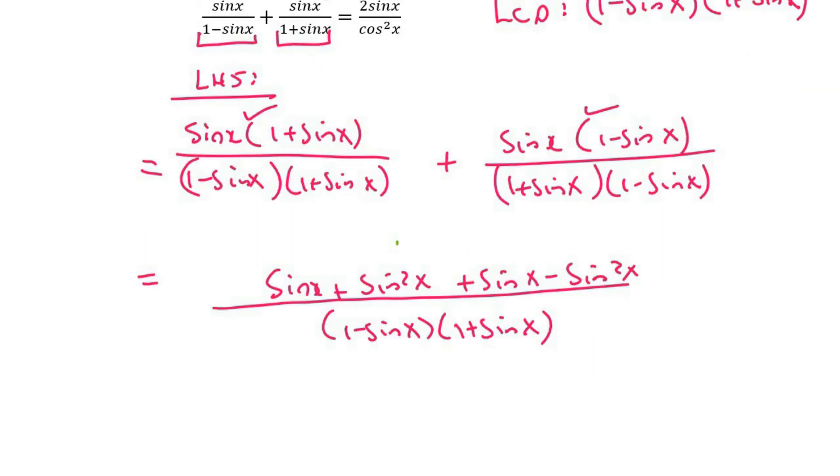And then what happens is that these two are going to cancel out. So at the top we're just going to be left with 2 sine x because sine x plus sine x is 2 sine x. And then at the bottom we're going to be left with this.